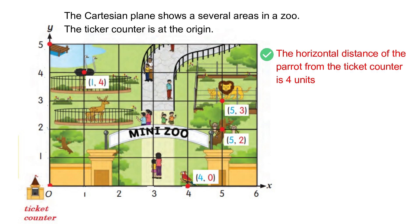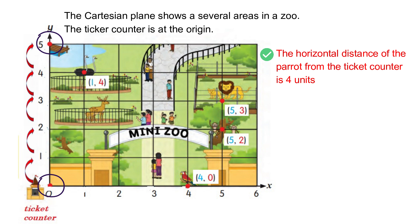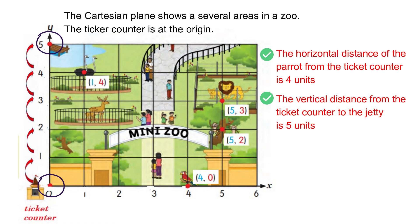Now, what is the vertical distance from the ticket counter to the jetty? From the ticket counter, which is the origin, to go to the jetty, we have to move up five units. So the vertical distance from the ticket counter to the jetty is five units.